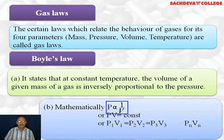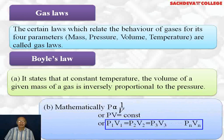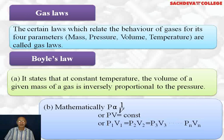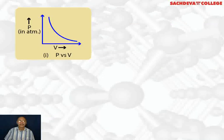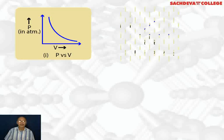Mathematically, P is inversely proportional to volume, or pressure times volume equals a constant. So P1V1 = P2V2 = P3V3, and so on up to PnVn. This formula will be used for solving numericals based on Boyle's law. The first graph is plotted between pressure and volume, and it is clear that as pressure decreases, volume increases — they are inversely proportional.